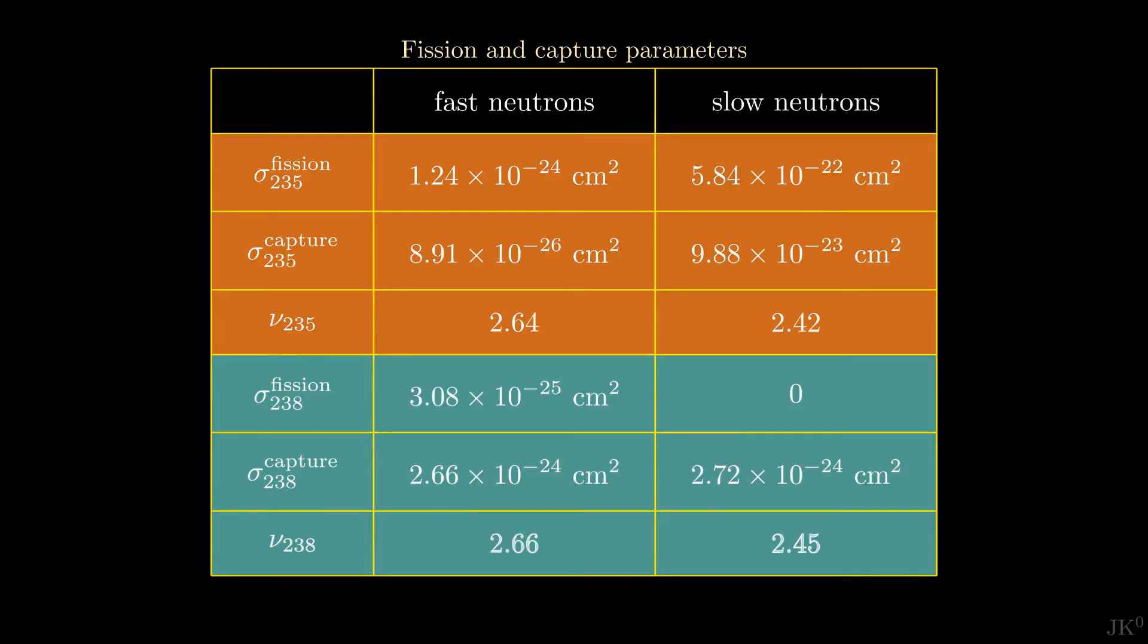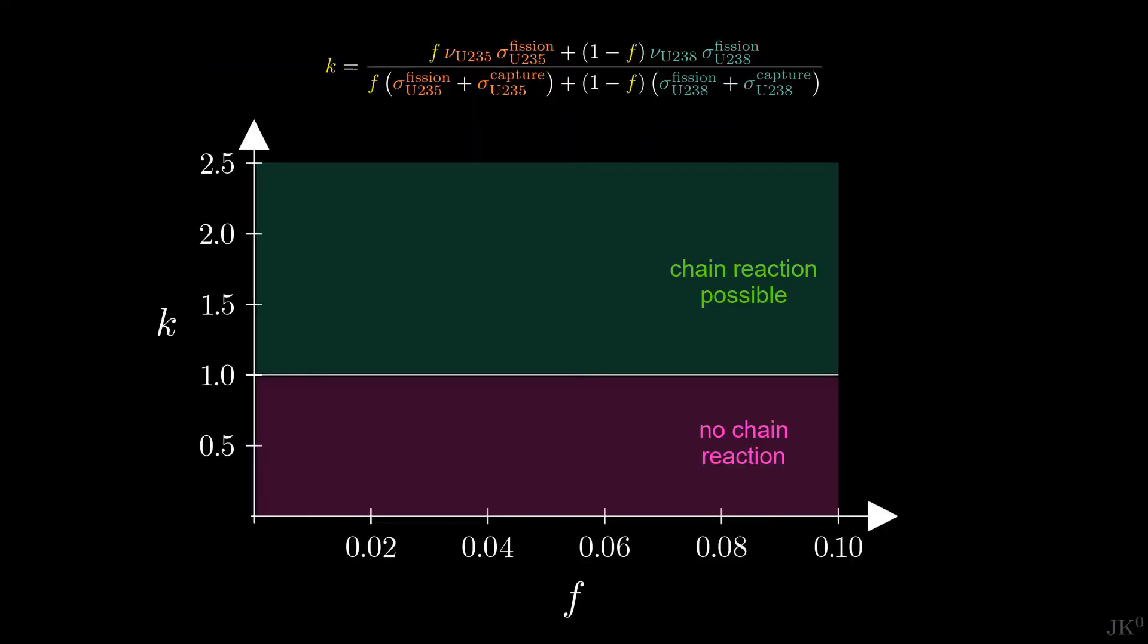Plugging these values in the general formula derived earlier, we find that the criticality factor looks very different. The curve increases rapidly for low values of f and quickly flattens to remain constant for higher values. Zooming in on the low values of f, we find that K is greater than 1 even for natural uranium. This result is what makes nuclear reactors possible.